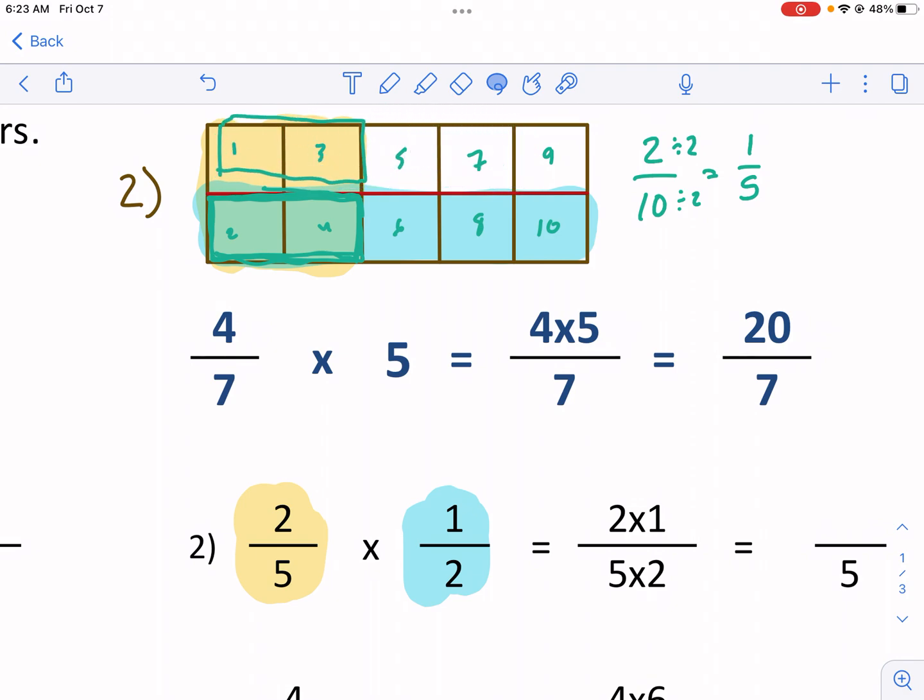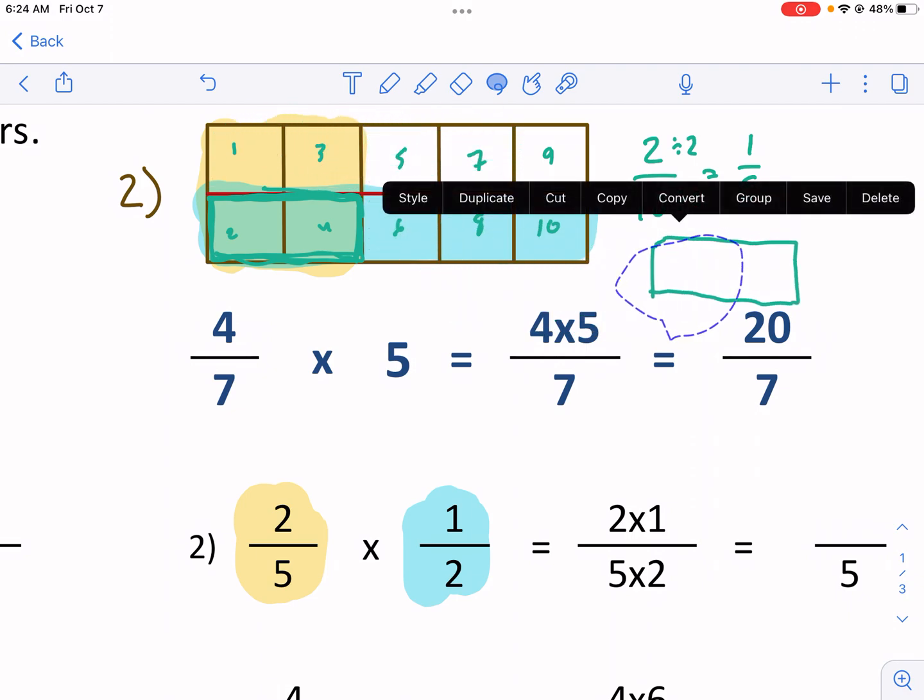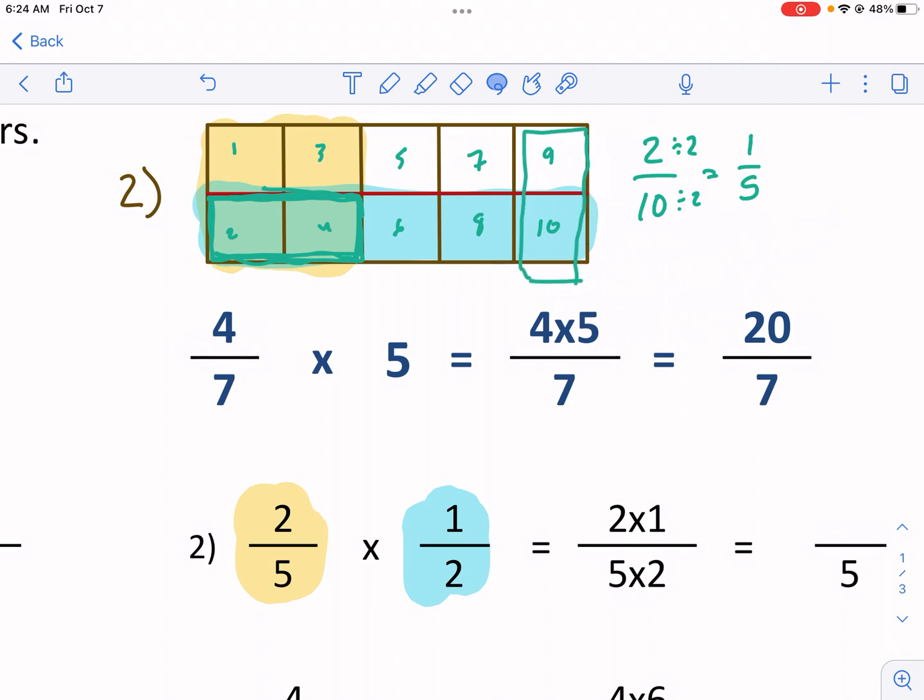So you can see this represents two tenths or one fifth. And how many of these do I have? I have one, two, three, four, and then if I flip this vertically, which I think I can do, five.